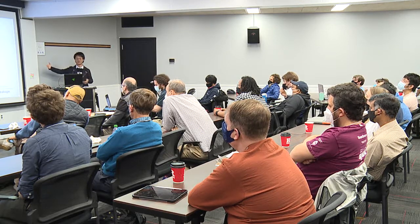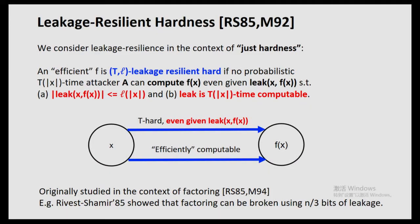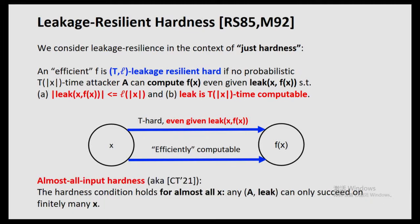We recall this function F to be somewhat efficiently computable, depending on the context. And since we are dealing with derandomization, we recall this function to be hard for almost all inputs. More formally, the leakage-resilient hardness condition holds for almost all inputs x — just as we talked about yesterday. Namely, any pair of (A, leak) can only succeed on finitely many inputs x.